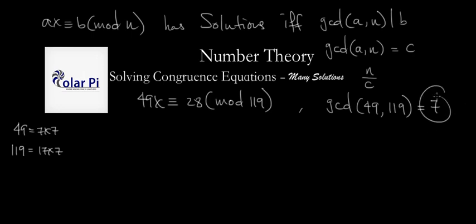So 7 is c in this case, so we're saying that this equation has 7 solutions, 7 unique solutions. All right. And furthermore, we're also saying that n, which is 119 divided by c, that is 119 divided by 7, which according to this multiplication needs to equal 17, tells us how far apart those 7 solutions will be when written in ascending or descending order.